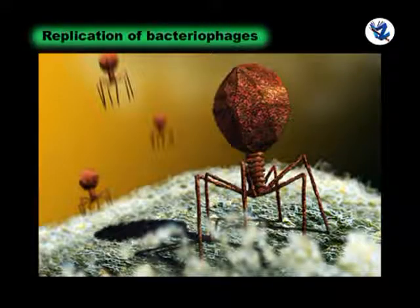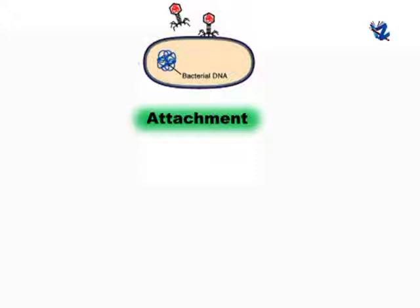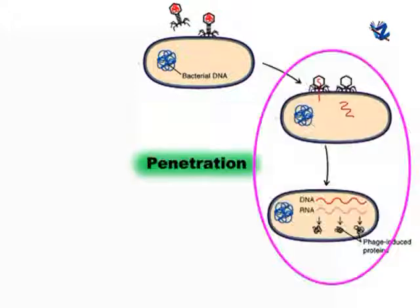Replication of bacteriophages inside the specific host or bacterial cell takes place in the following steps. First, attachment: bacteriophages attach to specific receptors on the surface of bacteria. Second, penetration: the tail fibers bring the base plate closer to the surface of the cell; once attached completely, the tail contracts, injecting genetic material — DNA — through the bacterial membrane. The protein coat (capsid) remains outside and is called a ghost.